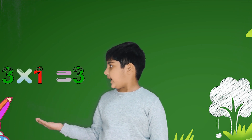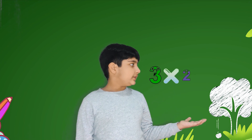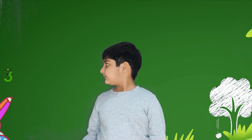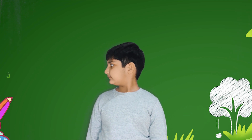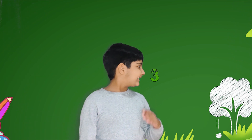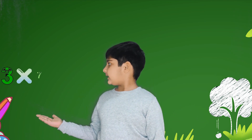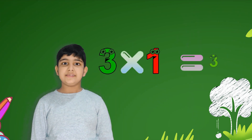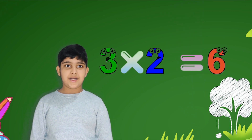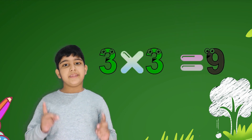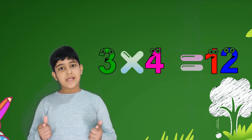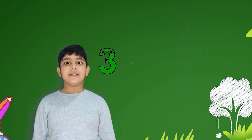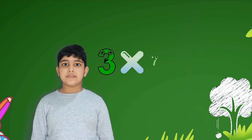3 ones are 3, 3 twos are 6, 3 threes are 9, 3 fours are 12, 3 fives are 15, 3 sixes are 18, 3 sevens are 21, 3 eights are 24, 3 nines are 27.